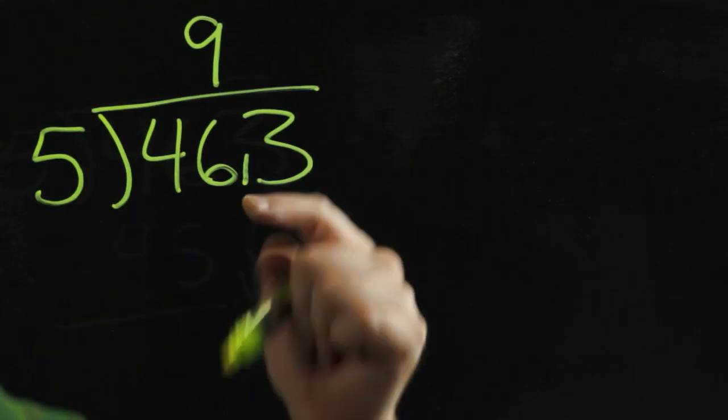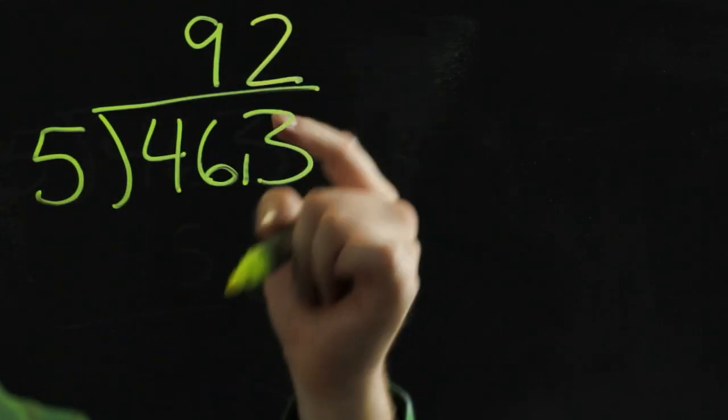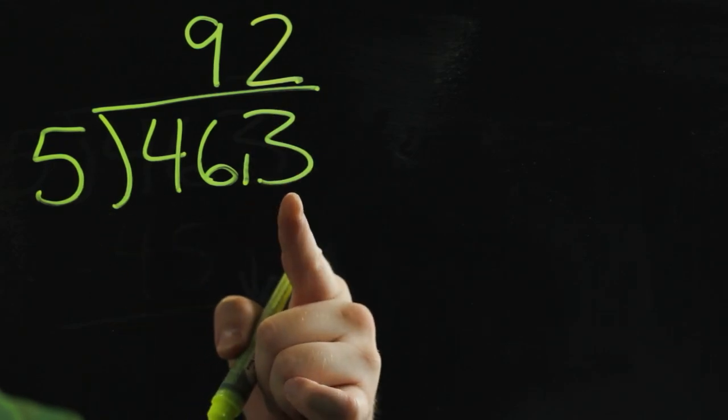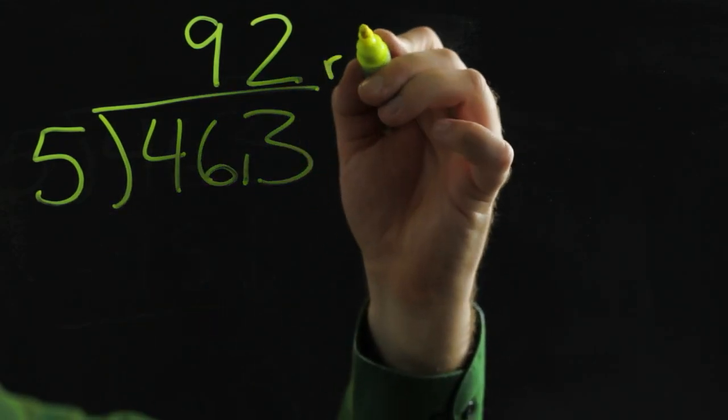Now how many fives can I take out of 13? I can take 2. Two fives is 10, so I have 3 left. There's nothing left over here, so that 3 becomes my remainder.